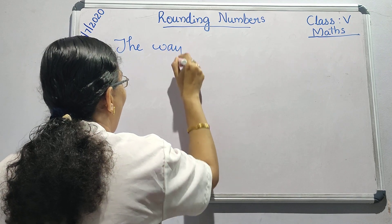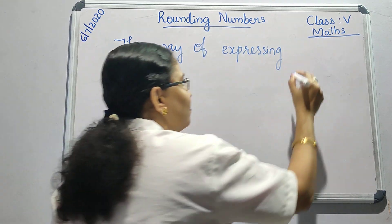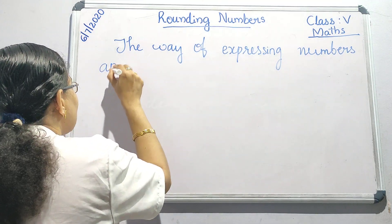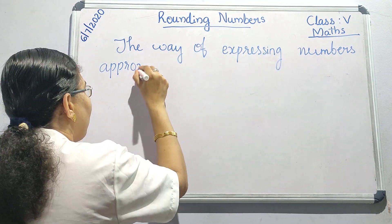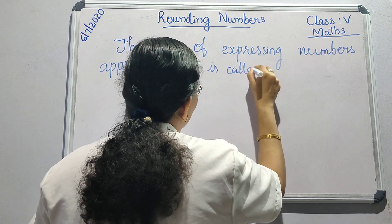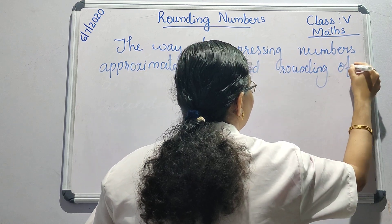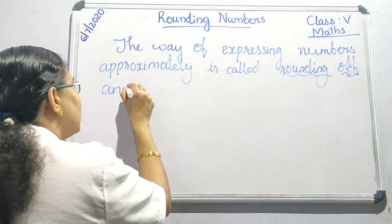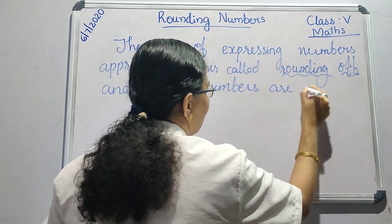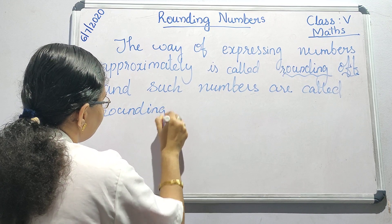The way of expressing numbers — not exactly, but approximately — is called rounding off. And such numbers are called rounding numbers.